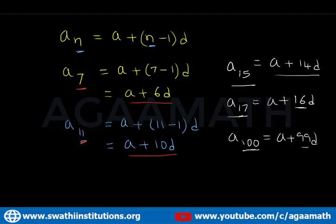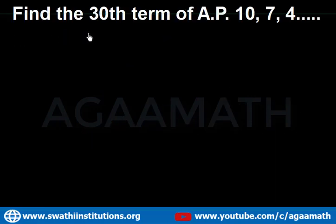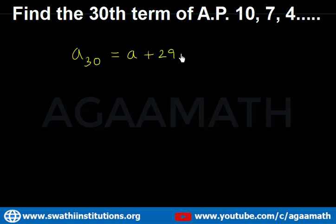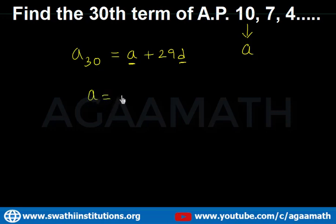Now let us see how to find the term of a given AP. The question is: find the 30th term of the AP 10, 7, 4... We want a30, which equals a + (30 minus 1) times d = a + 29d. To find this, we need to know what a and d are. Here, a equals 10, which is the first term.